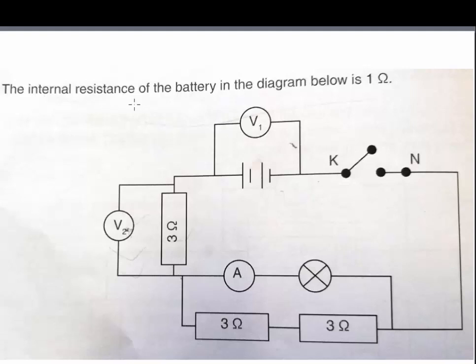We also know that the internal resistance of the battery in the diagram is 1 ohm, and then the reading on voltmeter 1 changes from 12 volts to 10 volts the moment that the switch is closed. So when we see the switch closed, we see this change occur.